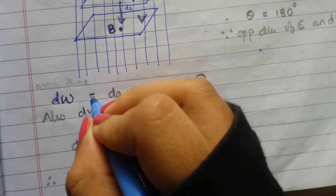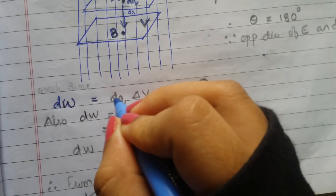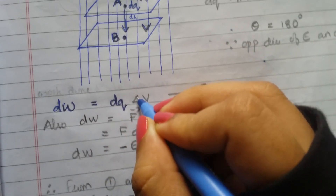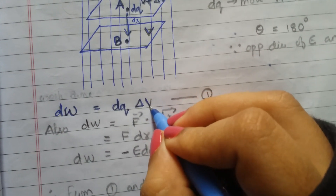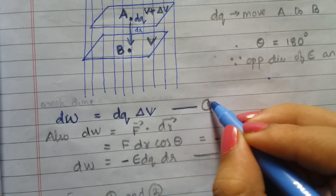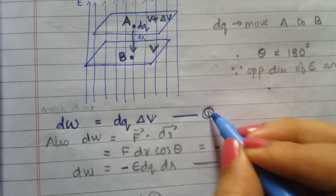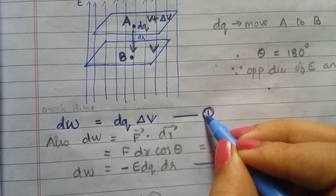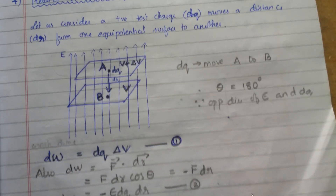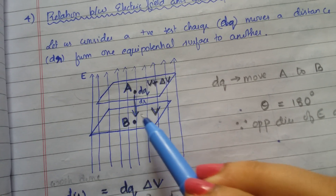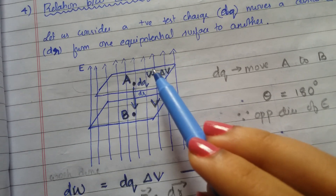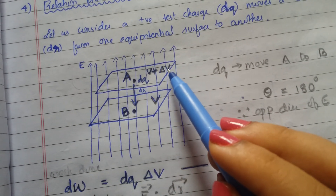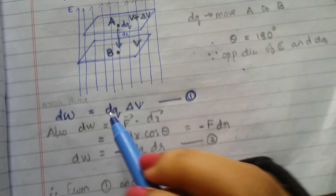The work done dW will be equal to dq times delta V. This will be equation one.